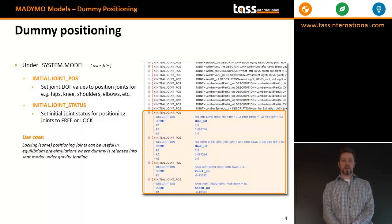Under the system model in the user file, initial joint position elements for all major joints are included. Initial joint status can be set to free or lock.